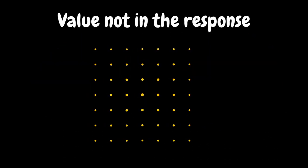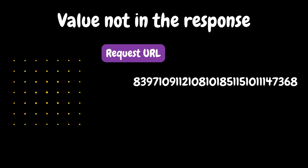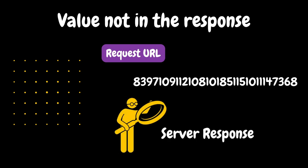The next challenge is when a value is not in the response. This is an interesting challenge from real projects. When we record scripts, we check for dynamic values in a particular request. If we look at the first-party environment, we check the dynamic value in the server response, but we check the boundaries — and the value is not there.